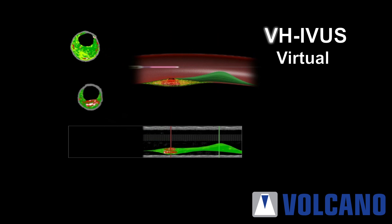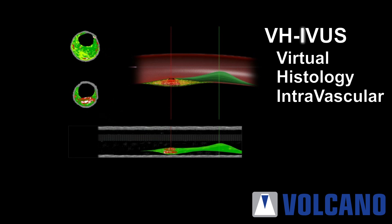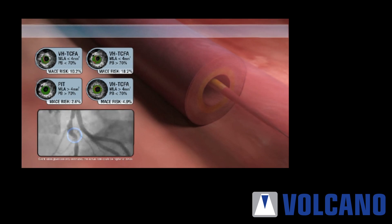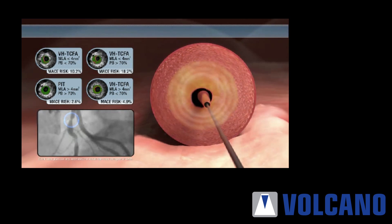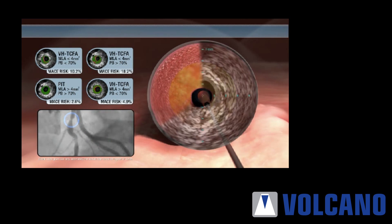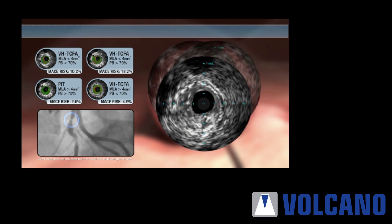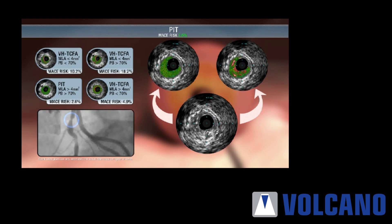VH-IVUS, or Virtual Histology Intravascular Ultrasound, can generate images of the artery cross-section from an ultrasound catheter tracked through the vasculature, and can distinguish between low-risk intimal thickening and a higher-risk lesion.